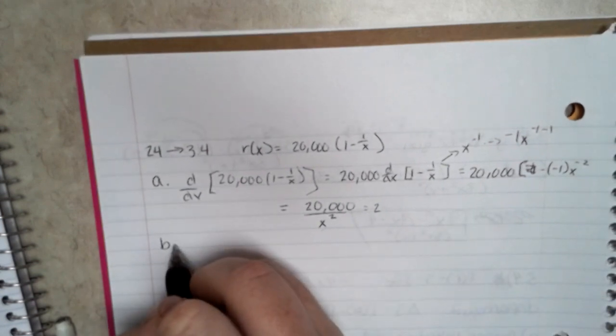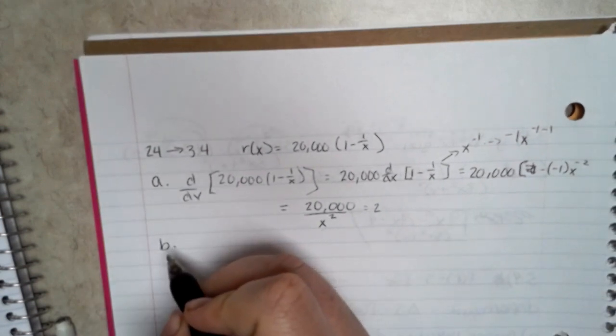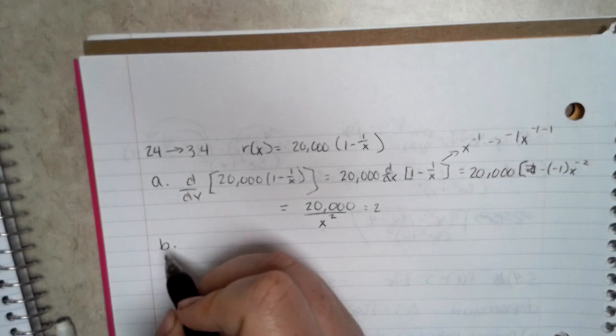And then part B is asking: use the function r'(x) to estimate the increase in revenue that will result from increasing production from 100 machines a week to 101 machines a week.